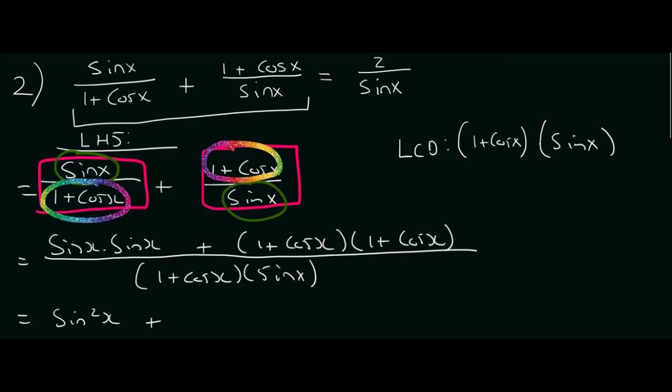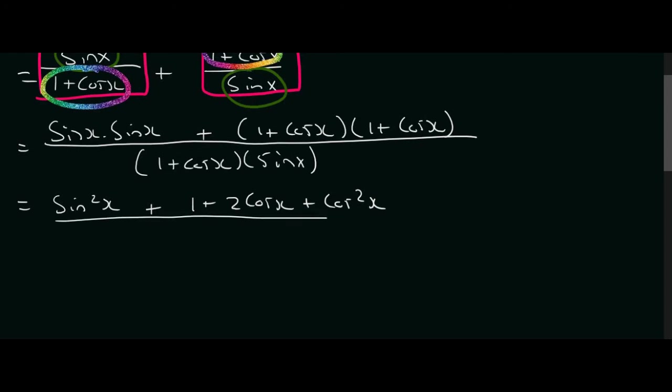We're then going to multiply these two brackets together. After you do that you should end up with that over there, and then of course we have the denominator which will remain as it is for now.